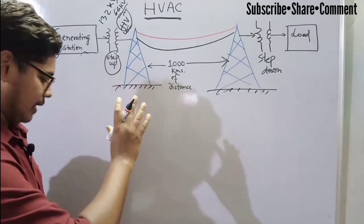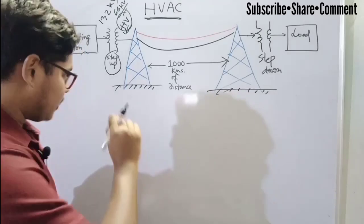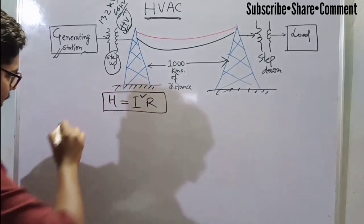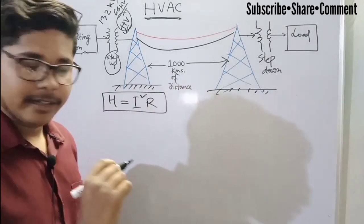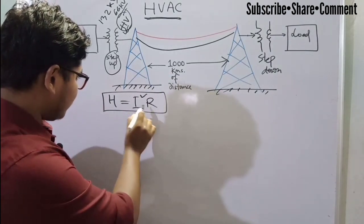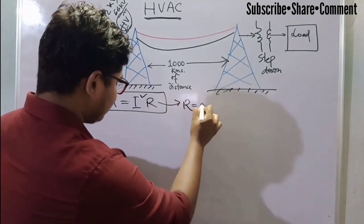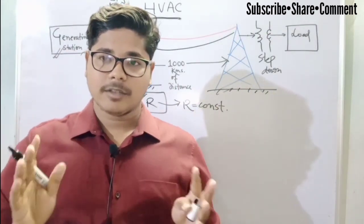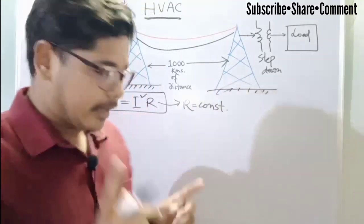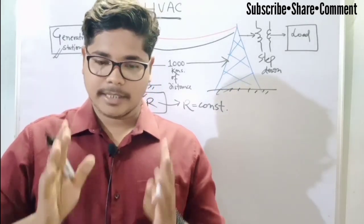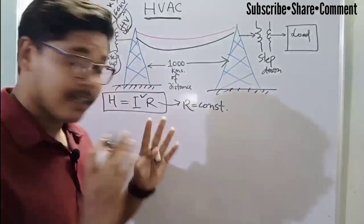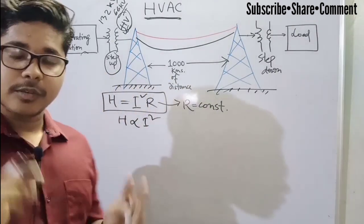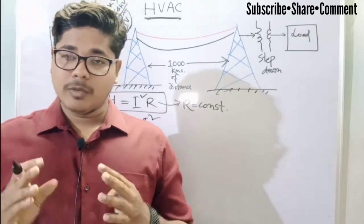There will be some electric losses in the transmission lines. That loss is I² × R — this is the heat loss, or electric loss, in a transmission line. This loss equals I² × R. Resistance is always constant for a specific conductor, because resistance depends on the length and cross-sectional area of the conductor, and those values never change. So resistance is constant, which means the loss is directly proportional to the square of the current.